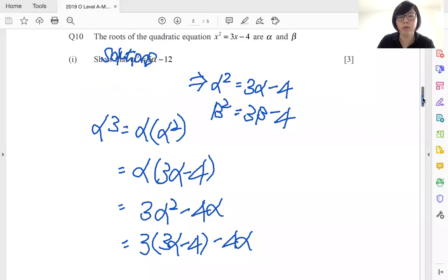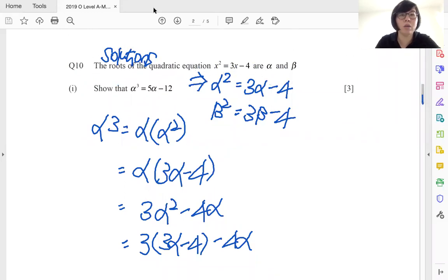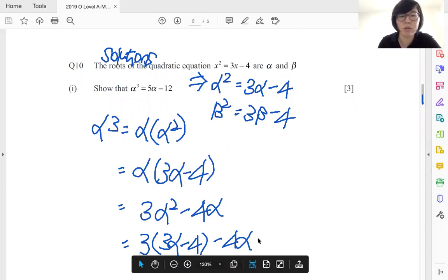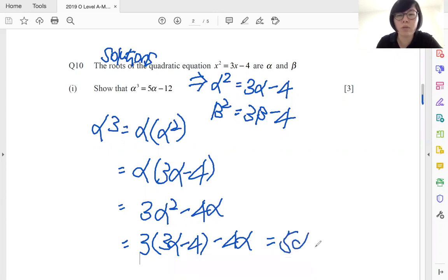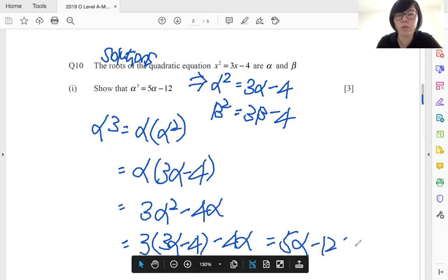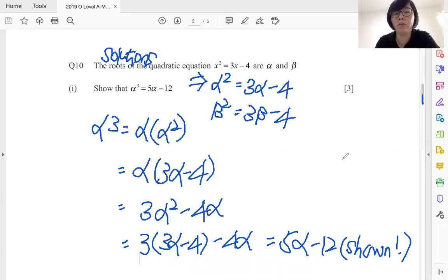We can simplify and it'll get you to the right hand side that we need to prove. Okay, so let me just write it here. That will simply be 9 alpha minus 4 alpha will be 5 alpha minus 12. Sure, and that's how we approach part one of the question. It's three marks, which means to say you need to get it done within three minutes.